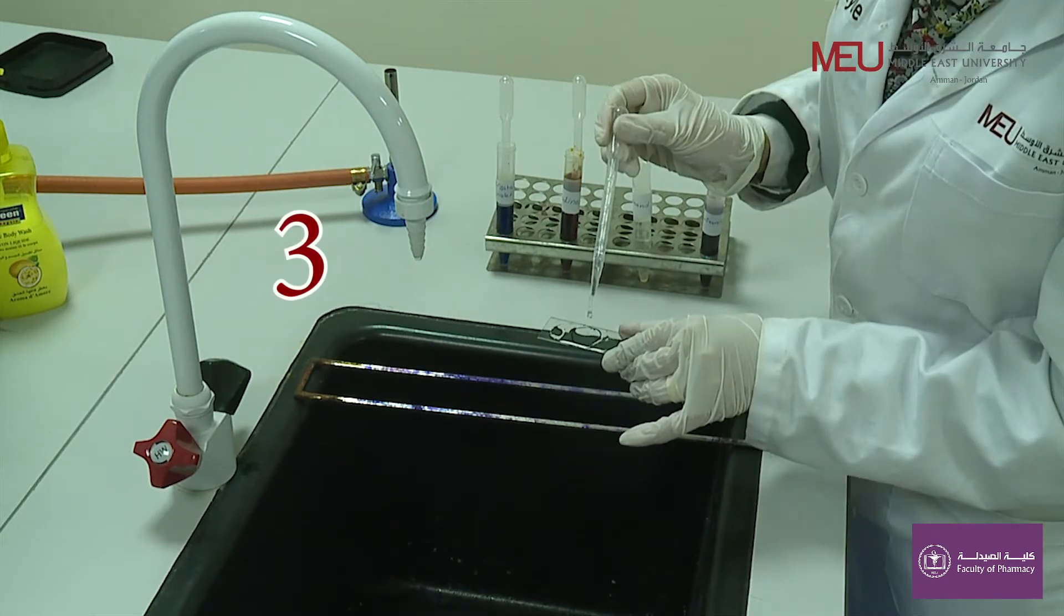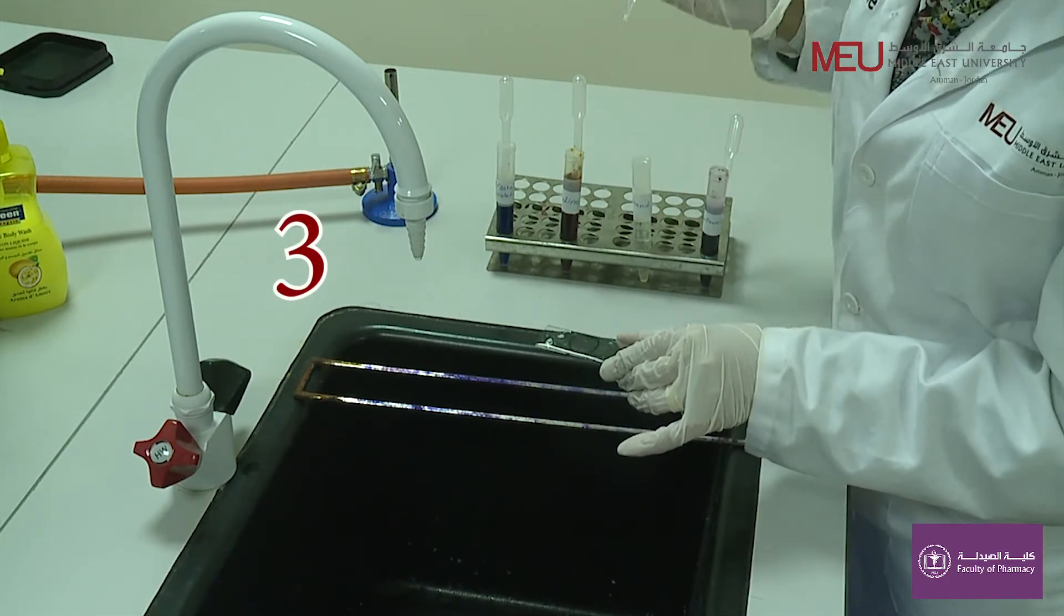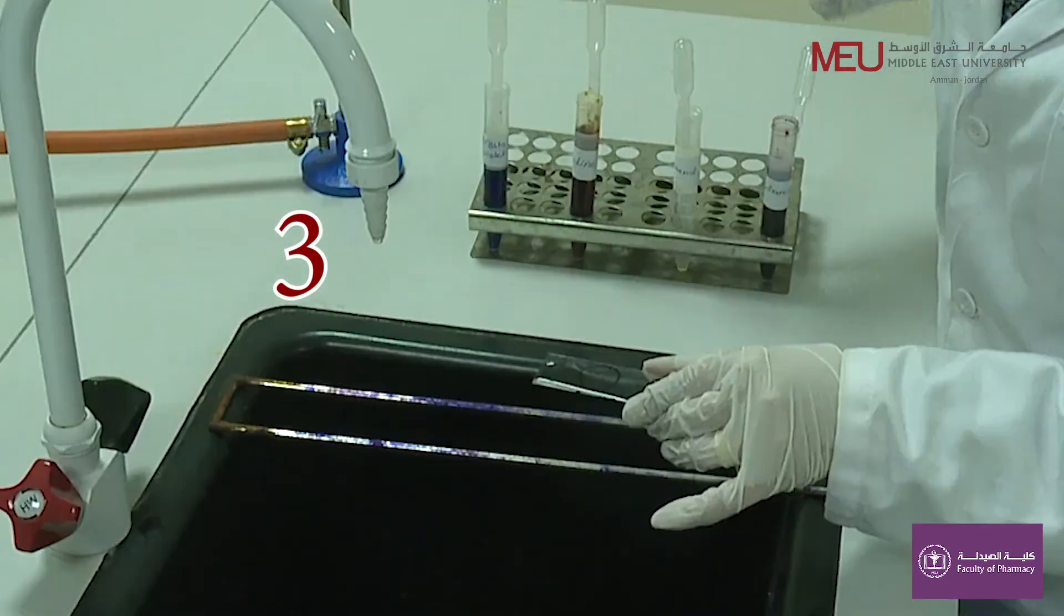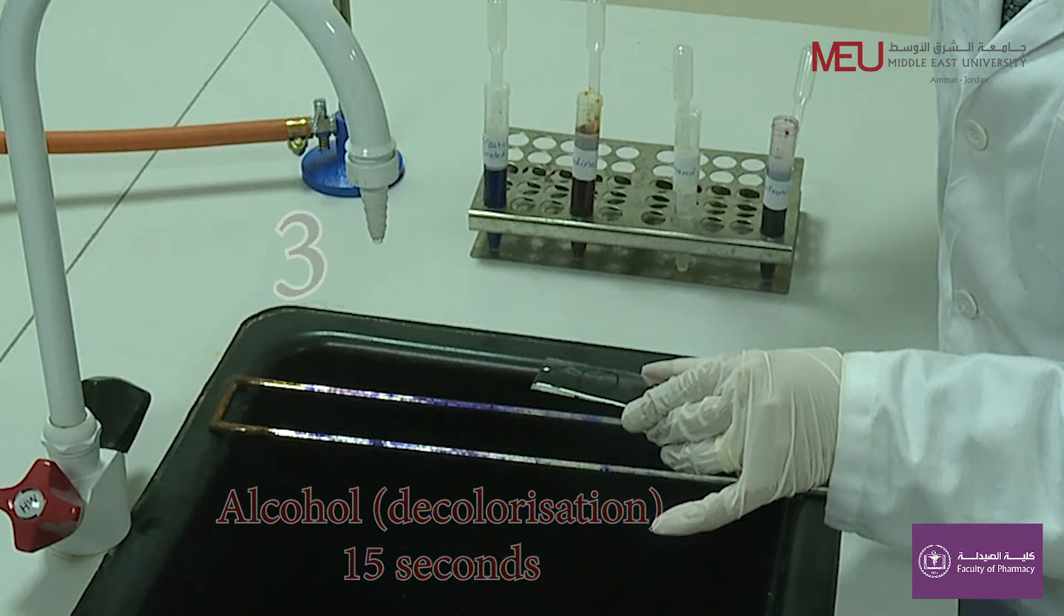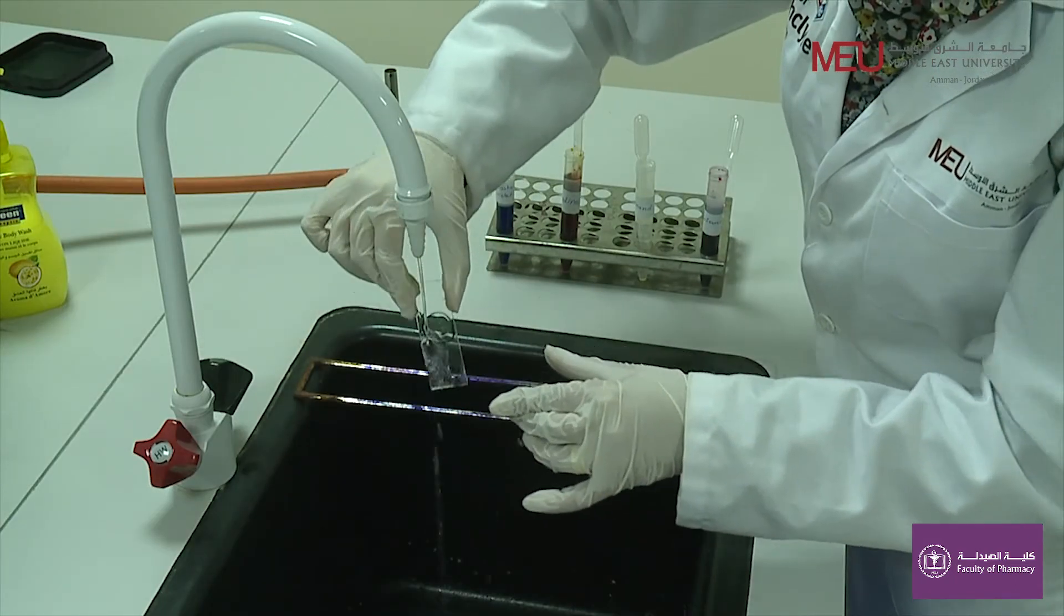Step number three includes rinsing with decolorizing reagent as demonstrated by the instructor. This is a crucial step and should take only 15 seconds. Immediately rinse the smear with water to remove the last bit of the crystal violet and decolorizing agent.